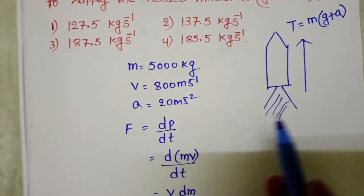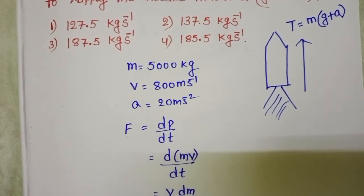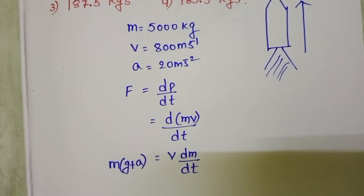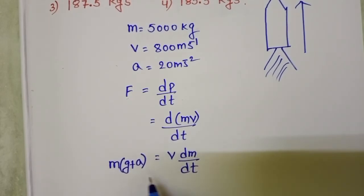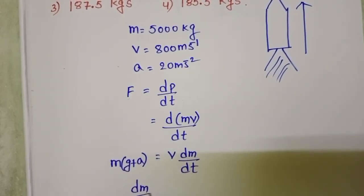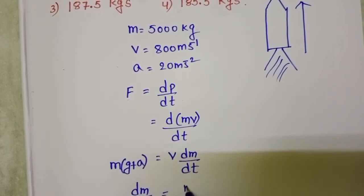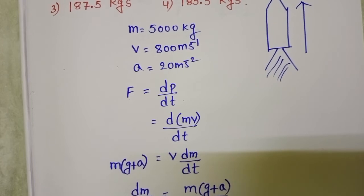And in place of force, take the upward thrust, M into G plus A. And from this, we want dm by dt equals M into G plus A by V.